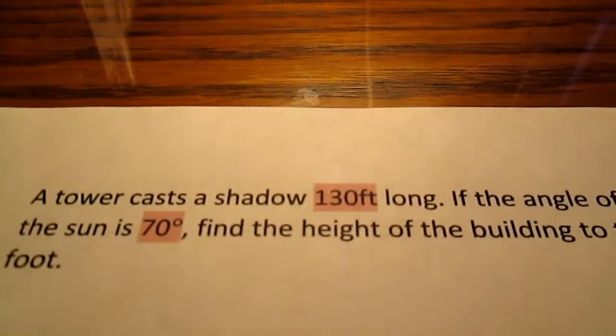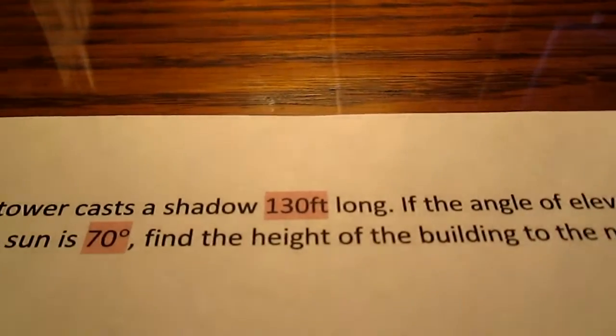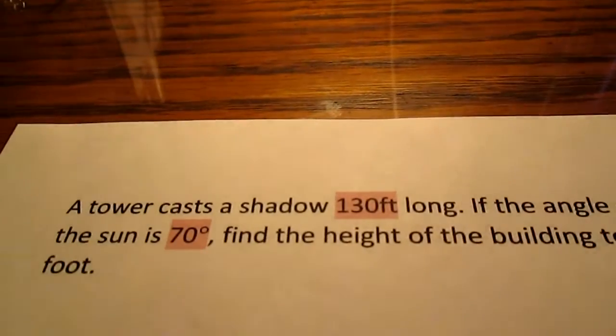A tower casts a shadow 130 feet long. If the angle of elevation of the sun is 70 degrees, find the height of the building to the nearest foot.